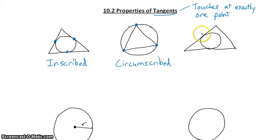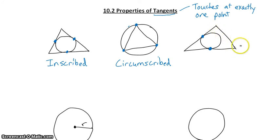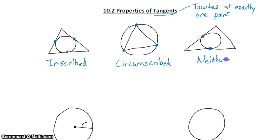In the third one, we have two sides of the triangle tangent to the circle, but the third side is not tangent. So the circle is neither inscribed nor circumscribed — it's neither.